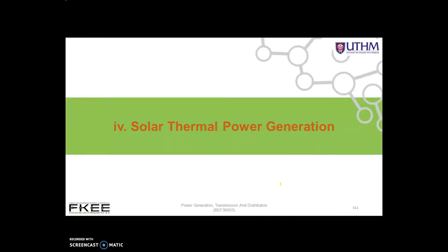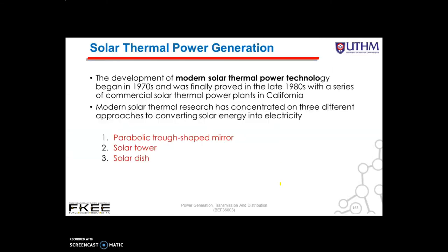The first technology is solar thermal power generation. The development of modern solar thermal power technology began in the 1970s and was finally proved in the late 1980s with a series of commercial solar thermal power plants in California. Modern solar thermal research has concentrated on three different approaches: the parabolic trough mirror, the solar tower, and the solar dish.